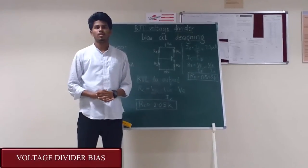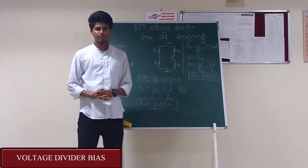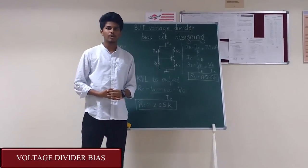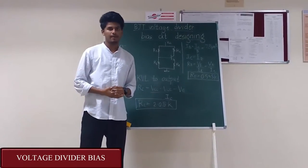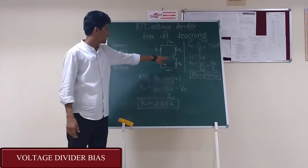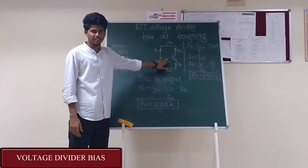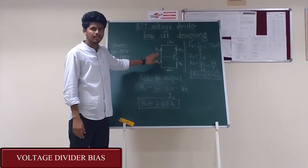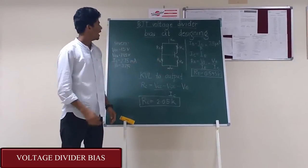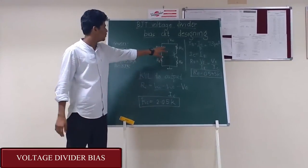Greetings to all. Welcome to Analog Electronics Lab 1. Now we are going to look into the BJT voltage divider bias circuit. Here we replace the RB circuit in the fixed bias circuit with R1 and R2. Our main objective is the designing of voltage divider bias.